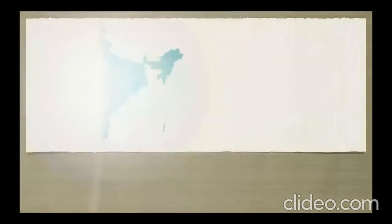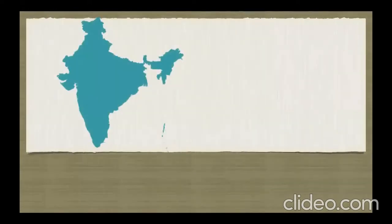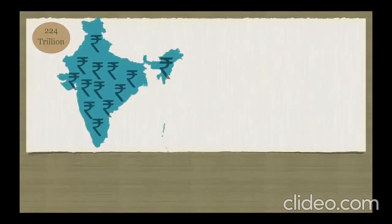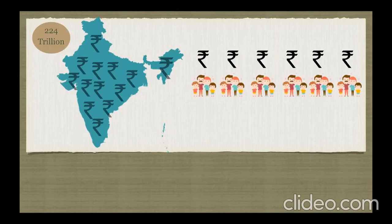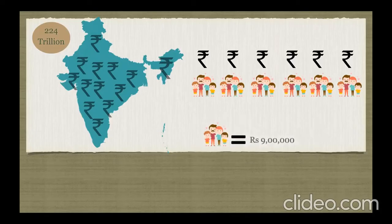We're talking about income inequality in India. The actual wealth of India is 224 trillion. If this wealth were divided among all families in India, the actual share of each family would be somewhere around 9 lakh rupees — but is that what we are getting? No.